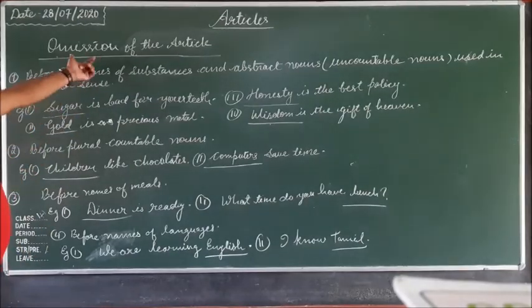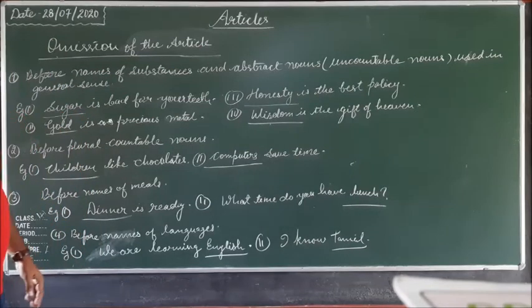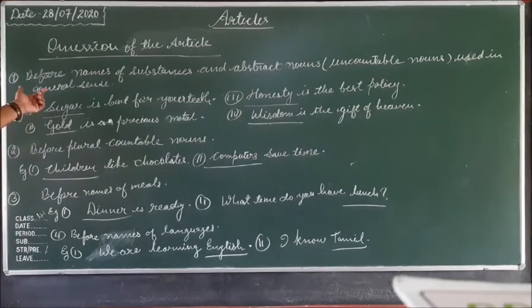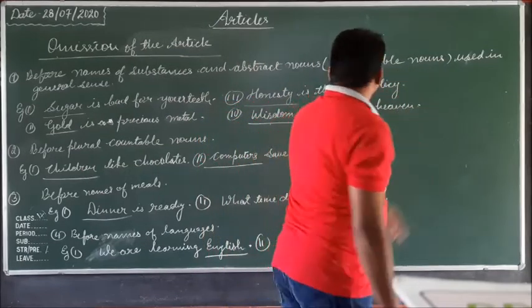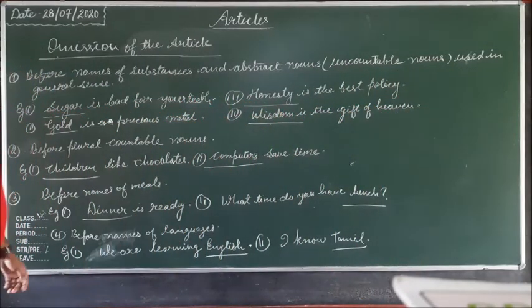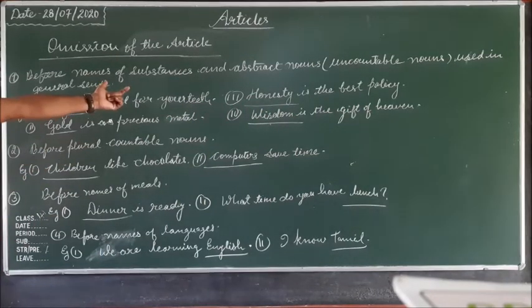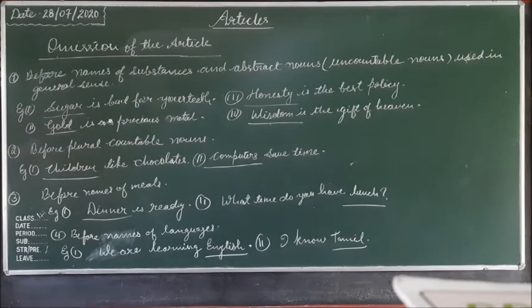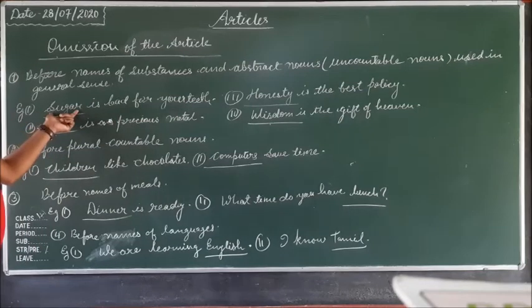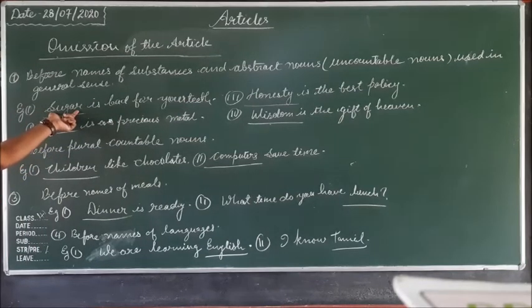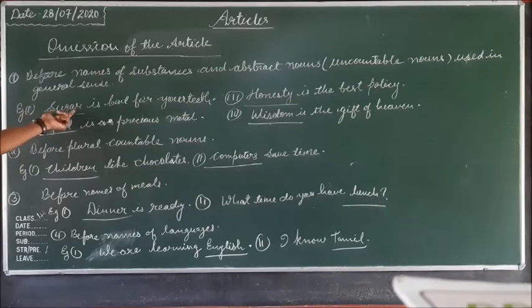Now we look at when articles are omitted — where articles are not used. Before names of substances and abstract nouns, or uncountable nouns used in a general sense, articles are not used. For example: 'Sugar is bad for your teeth.' Sugar is an uncountable noun and a substance, so before it we never use an article.